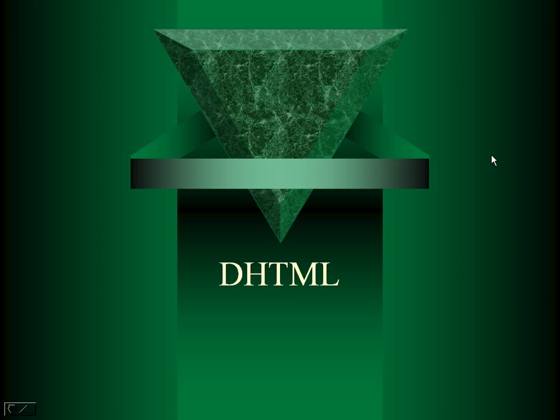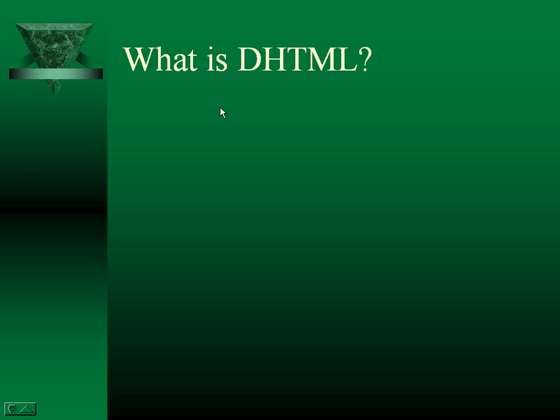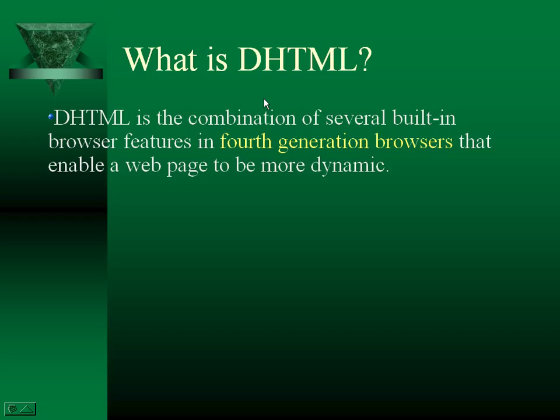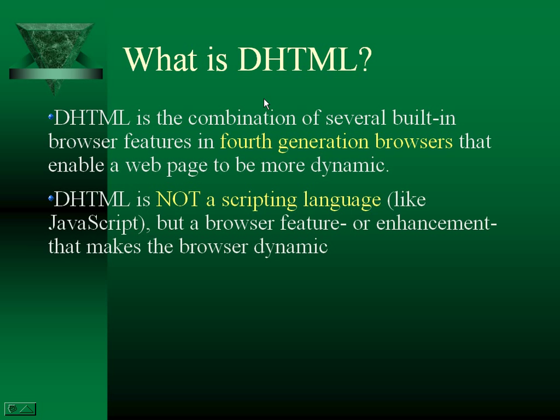In this session we are going to discuss about Dynamic Hypertext Markup Language, DHTML. DHTML is the combination of several built-in browser features in 4th generation browsers that enable the web page to be more dynamic. DHTML is not a scripting language like JavaScript, but a browser feature or enhancement that makes the browser dynamic.